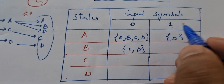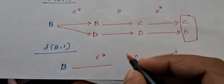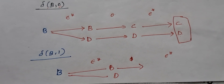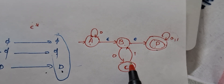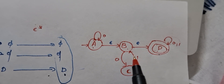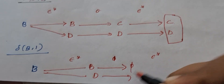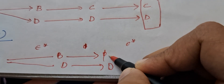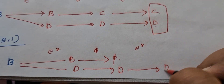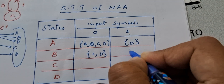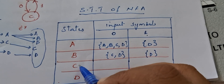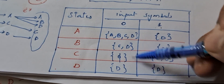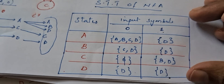For transition of 'b' on '1': epsilon-closure(b) = {b, d}. b on 1 is null, d on 1 → d. Epsilon-closure(d) = d. So the entry is {d}. Similarly, find the transitions of 'c' on '0' and '1', and 'd' on '0' and '1' — the answers are written in the table. After completing the state transition table of NFA, we can draw the state transition diagram.